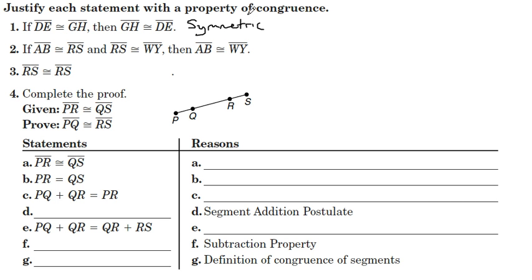Number two, if AB is congruent to RS and RS is congruent to WY, then AB is congruent to WY. That's an example of the transitive property. The way to help you remember transitive is just remember there's a connector that transfers one bit of information to the other. In this case, the RS is the connector. It connects AB congruent to WY.